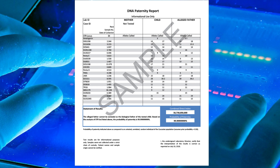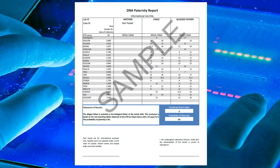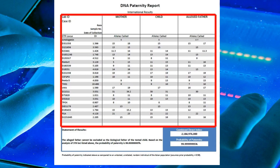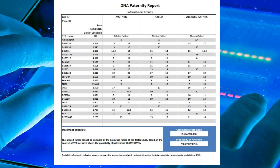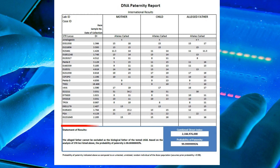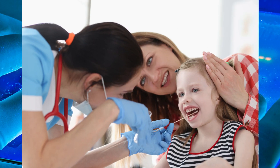The DNA paternity report shows the results of laboratory tests which provide evidence regarding whether the alleged father could be the biological parent of the named child. The paternity test report has four sections: genetic system table, combined paternity index (also called combined direct index), probability of paternity, and test conclusion.